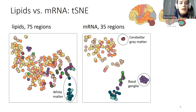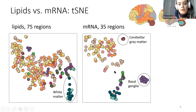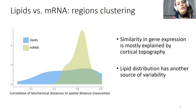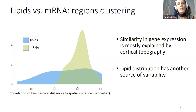The first result is that lipids behave differently across the brain. When we cluster brain regions based on lipid composition versus gene expression data, we get similar but quite different pictures. For mRNA data, the main factor is spatial proximity — neocortex here, cerebellar gray matter here, subcortical areas there. For lipids, the picture differs: there's still a white matter signal, but some cortical regions cluster closer to subcortical ones. Spatial proximity correlates well for mRNA but less so for lipids.